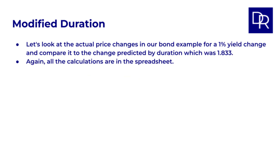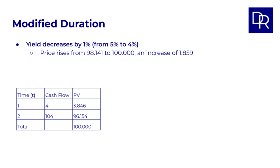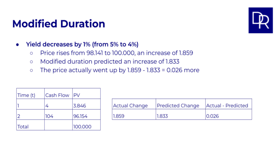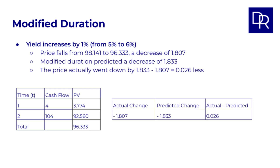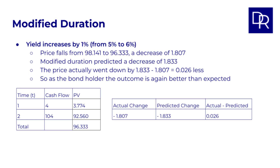Let's look at the actual price changes in our 2-year 4% coupon bond example for a 1% yield change, and compare it to the change predicted by duration, which was 1.833. When yield decreases by 1%, the price rises by 1.859. Modified duration predicted 1.833, so the price actually went up by 0.026 more — as the bond holder, the outcome is better than expected. When yield increases by 1%, the price falls to 96.333, a decrease of 1.807. Modified duration predicted a decrease of 1.833, so the price actually went down by 0.026 less — again as the bond holder, the outcome is better than expected.